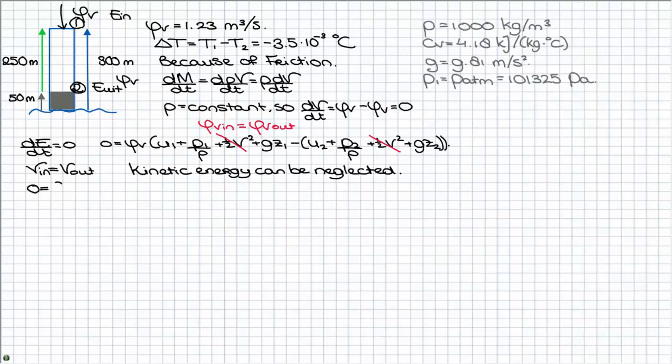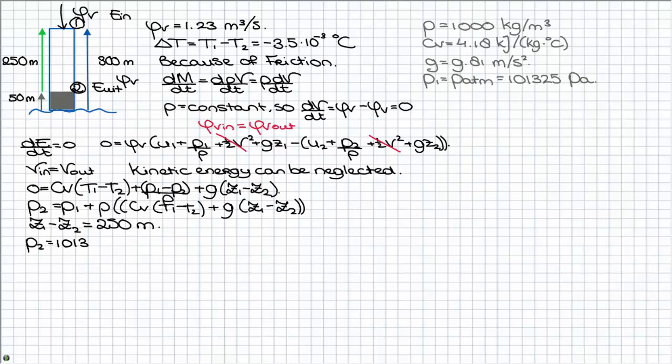The equation can be simplified now to the following equation. The exercise is to calculate the pressure at the outlet of the pipe, so pressure 2. So you have to isolate this pressure out of the equation. The last step is to fill in all the factors and you can calculate the answer.